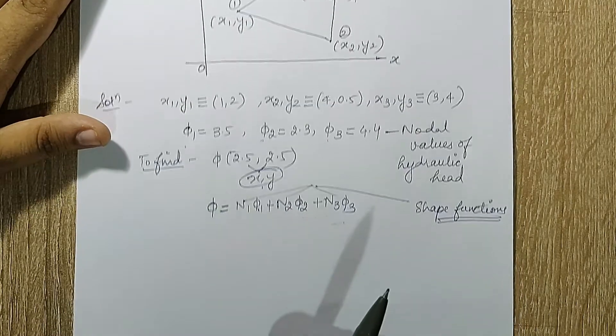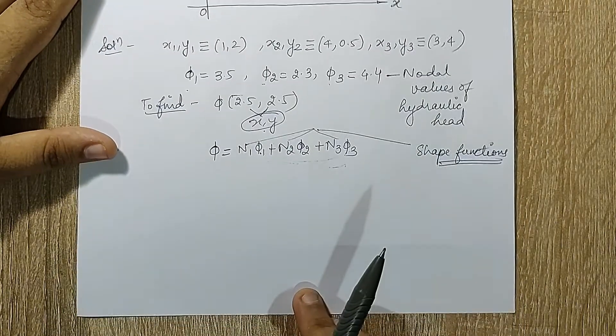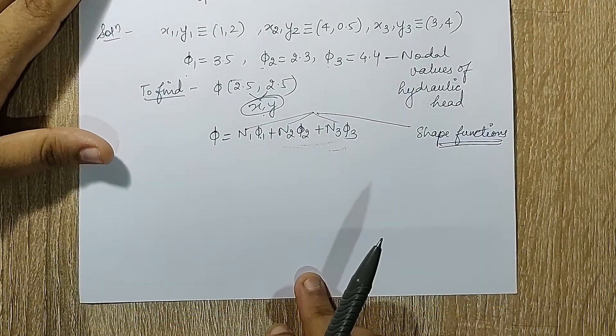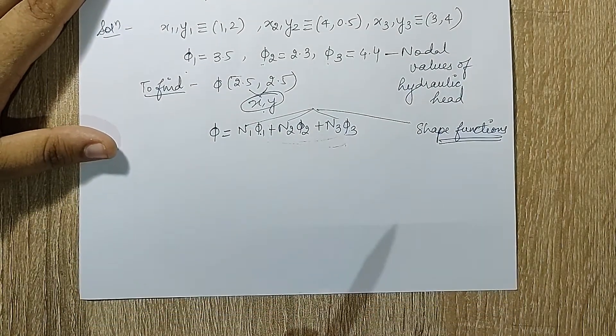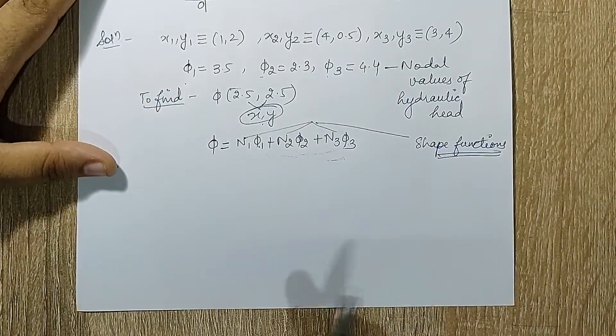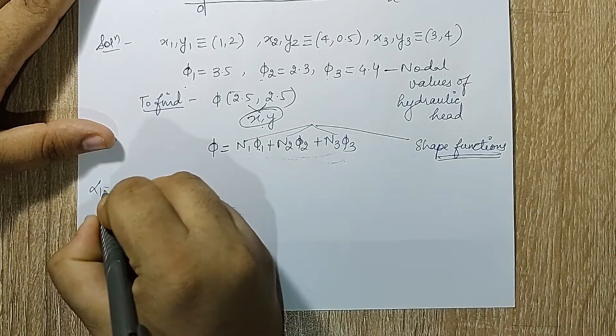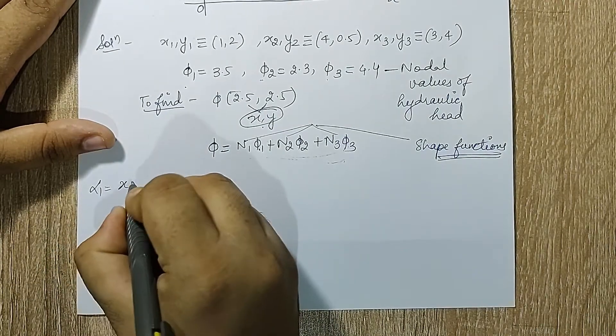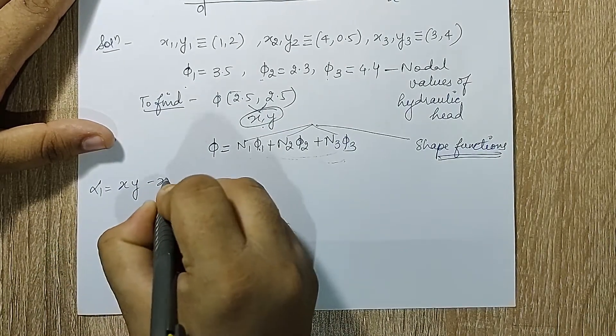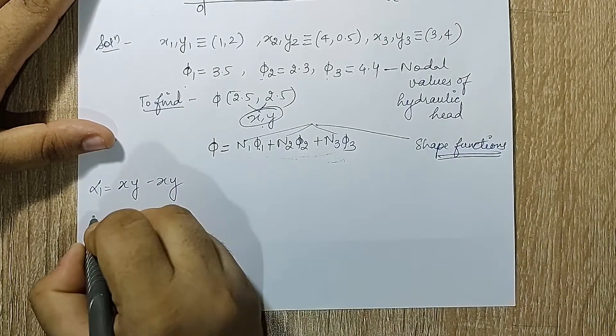Now let's start with the first calculation of alpha, beta, and gamma. I have to calculate alpha 1, which uses the x·y minus x·y formula.